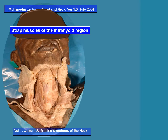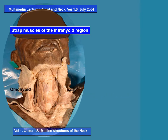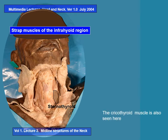Let's look at the infra-hyoid region and examine the strap muscles — the infra-hyoid strap muscles. The first muscle is the sternohyoid. There are two superficial muscles: the sternohyoid and the omohyoid. The sternohyoid on the opposite side is reflected, revealing the omohyoid muscle on the right side. Then there are two deep muscles: the thyrohyoid and the sternothyroid. The sternohyoid and omohyoid are superficial and therefore longer, followed by the two smaller muscles, the sternothyroid and thyrohyoid. The cricothyroid muscle is also visible but is out of context of the current strap muscle discussion.